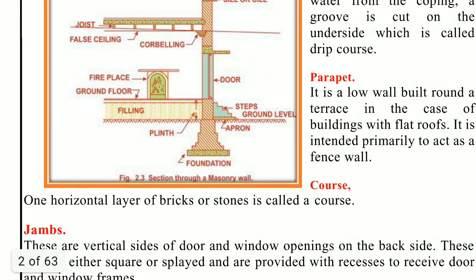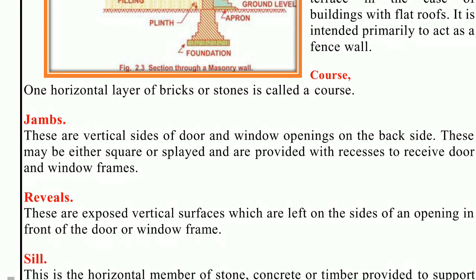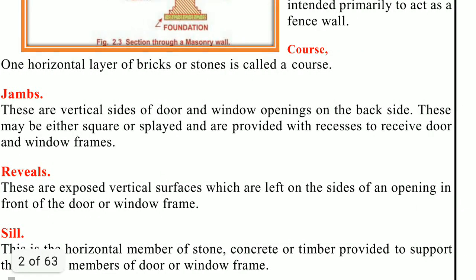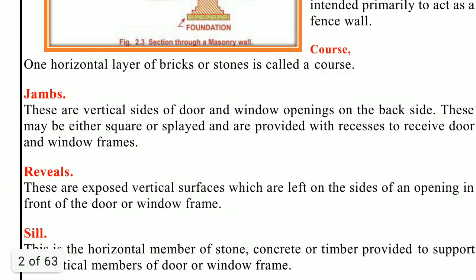Corbel is a projecting stone which is usually provided to serve as support for roof truss, beam, lintel, etc. The corbels are generally molded and given ornamental treatment. A corbel should extend at least two-thirds of its length into the wall.